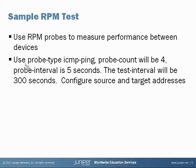With all that information, let's go ahead and configure a sample RPM test. Our objective here is to use RPM probes to measure performance between devices. We're going to use ICMP ping as our probe type. We want to set the probe count to 4 and send out probes every 5 seconds. Our test interval will be configured as 300 seconds, and we have to configure the source and target address.